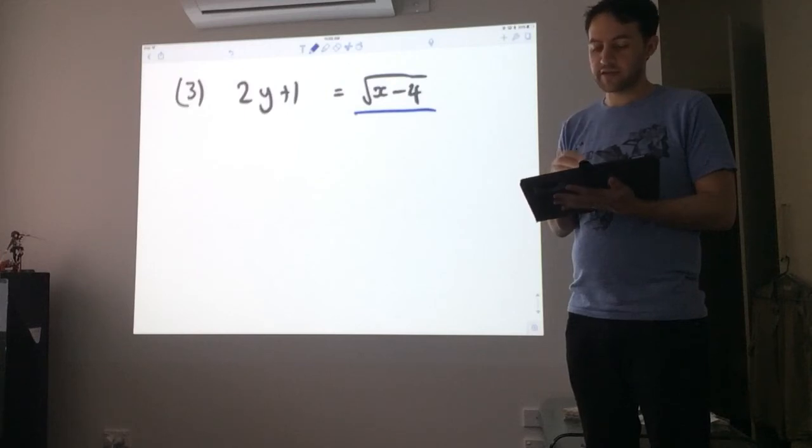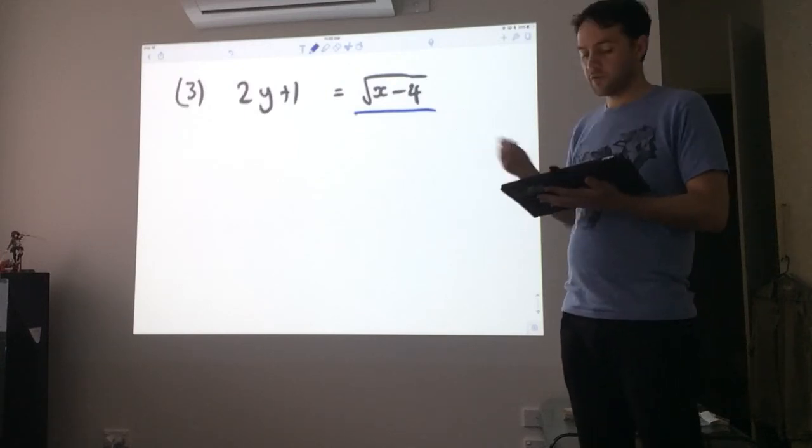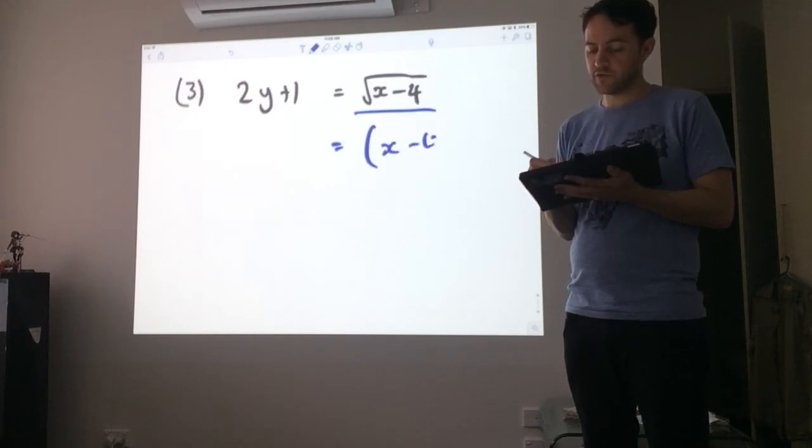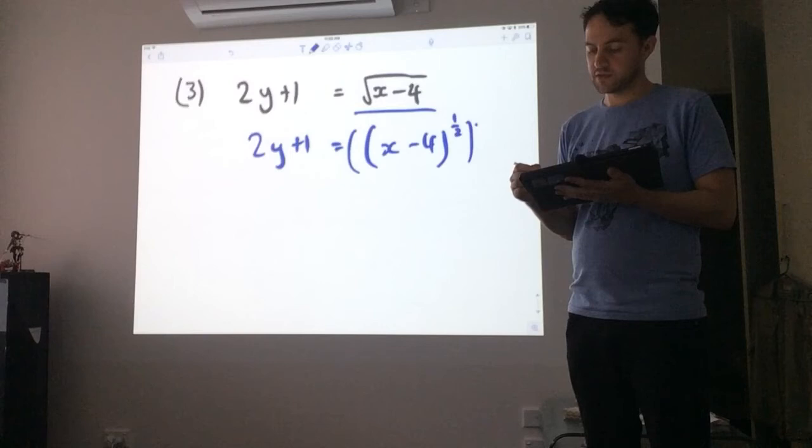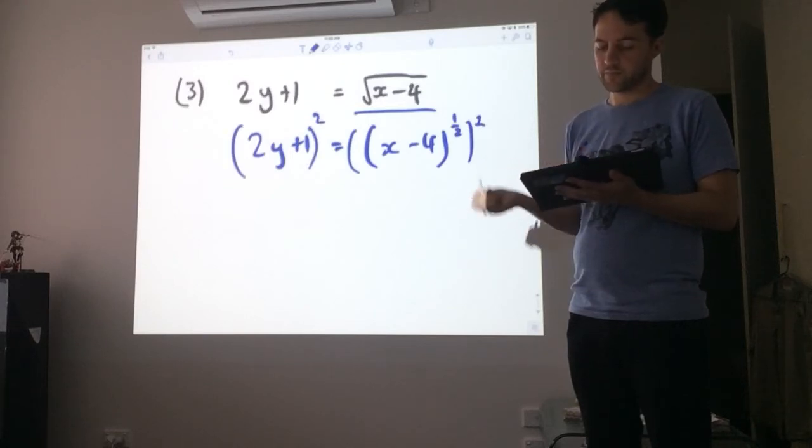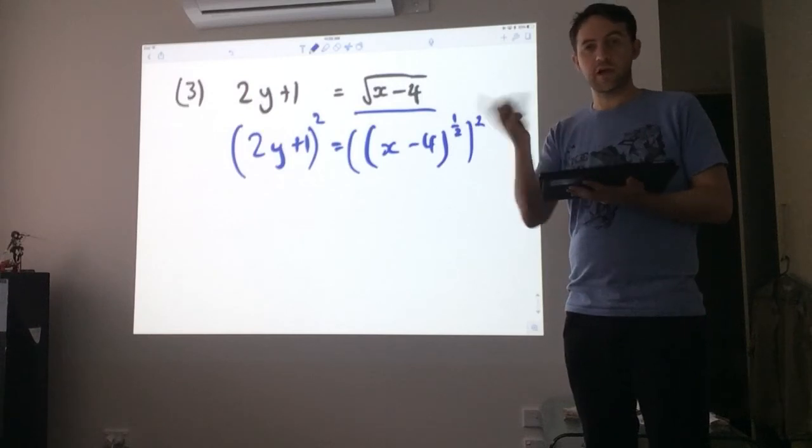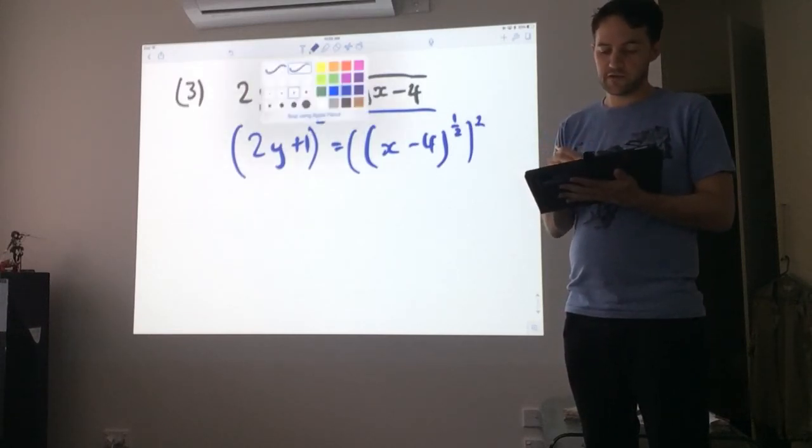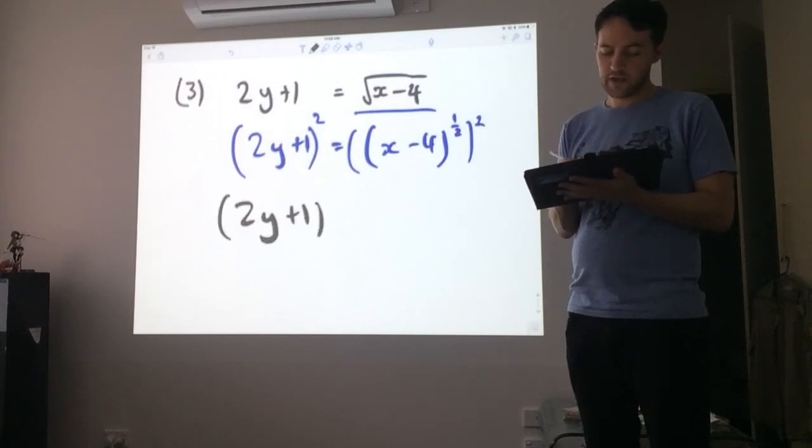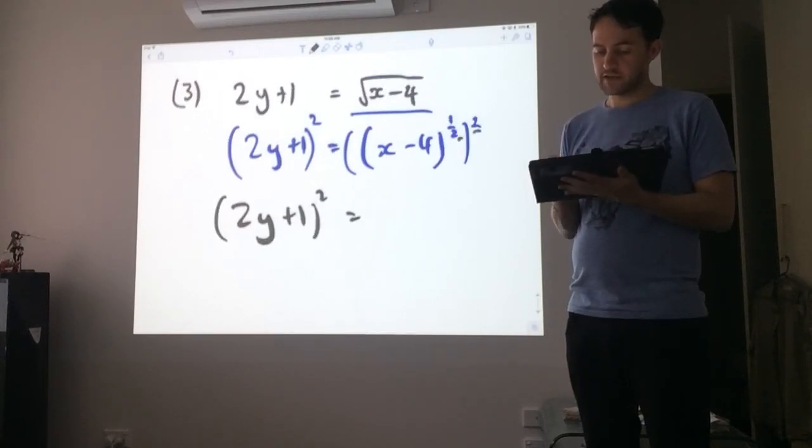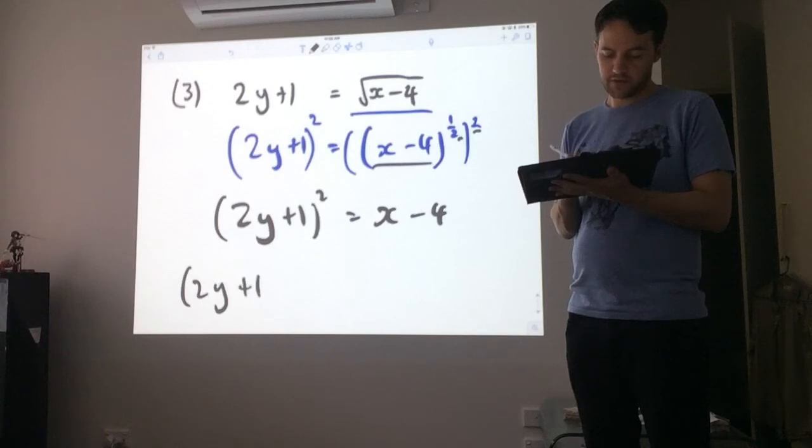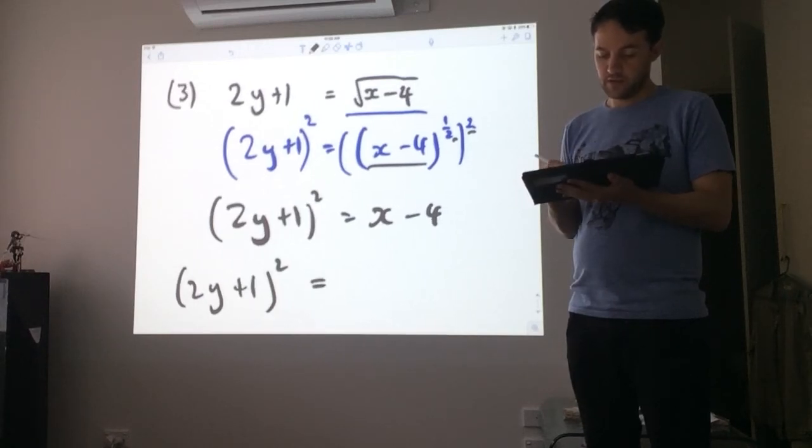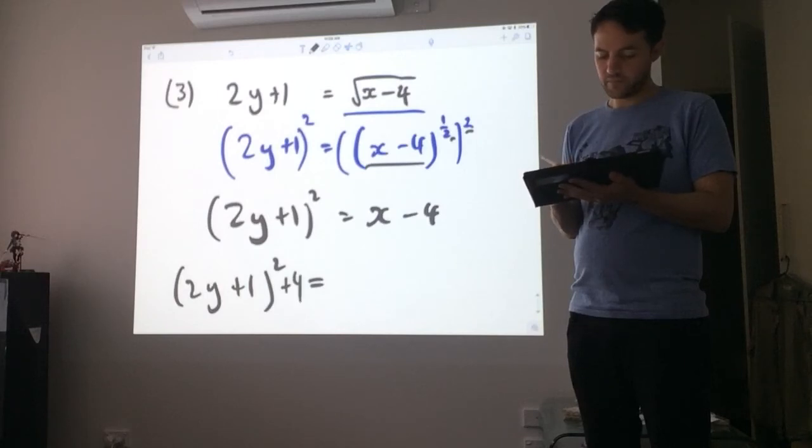But so in this case, if I want to solve for x, the first thing I need to do is be able to remove this root. And so I can either think of it as x minus 4 to the half, in which case the opposite of a half is 2, so I want to raise both sides to 2. Or I can just remember that squaring undoes a square root. But either way, if I do it like this, I'm going to have 2y plus 1 squared equals half, and a squared cancel out, so I just get this x minus 4. And then finally moving forward to the other side, we get 2y plus 1 squared plus 4 equals x.